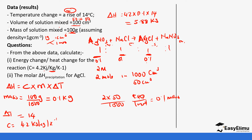So if 0.1 moles released 5.88 kJ of heat, what about 1 mole? That is 5.88 kJ ÷ 0.1 mol, which gives us 58.8 kJ/mol. Since our reaction was exothermic, we put a minus sign. So the molar enthalpy of precipitation is −58.8 kJ/mol. That's how you calculate the enthalpy change for precipitation.